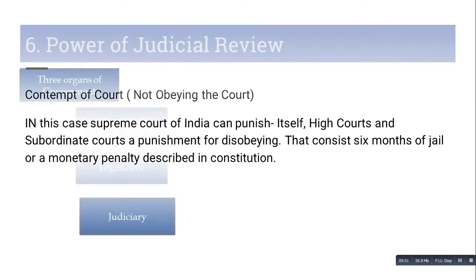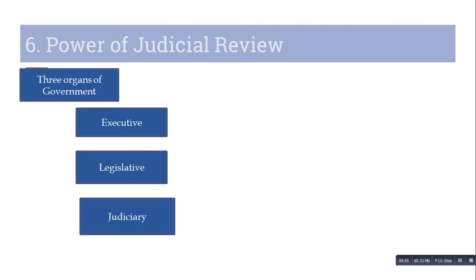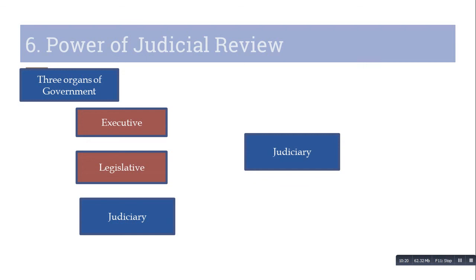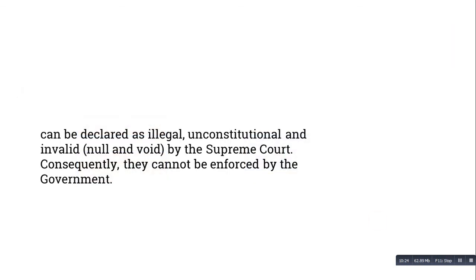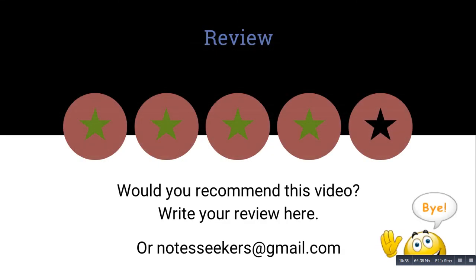Next comes the power of judicial review. The government has three organs: executive, legislative, and judiciary. The Supreme Court has the special power to review decisions made by the executive and legislative branches. The court cannot change their decisions but can review them — and this is called the power of judicial review. Laws made by the executive and legislative branches can be declared illegal, unconstitutional, and invalid by the Supreme Court, and consequently they cannot be enforced by the government. I hope you liked the video and understood everything about the Supreme Court. Thank you for watching Seekers Notes — have a good day!